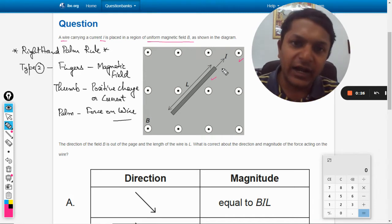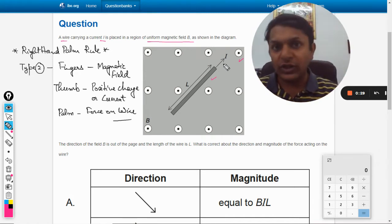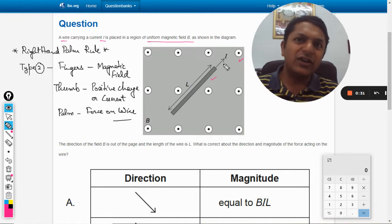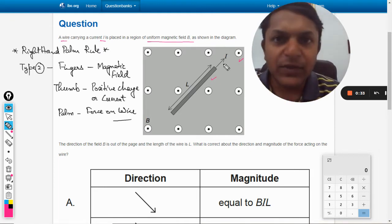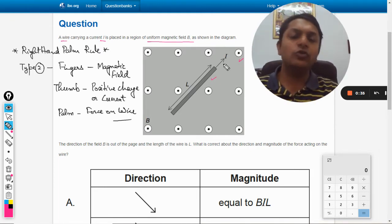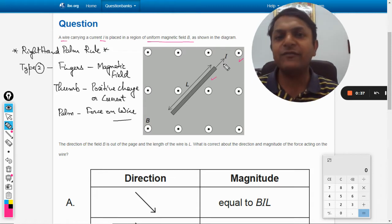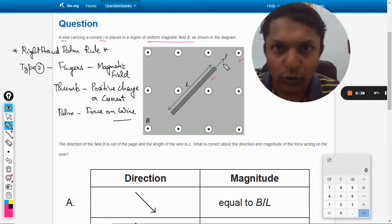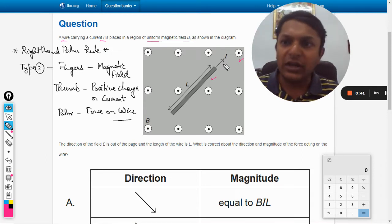As I have told you in all other videos, instead of Fleming's right hand rule or left hand rule, I prefer to use right hand palm rule which is already written on your screen. There are three types: type 1, type 2, and type 3. In this video particularly I am using only type 2.